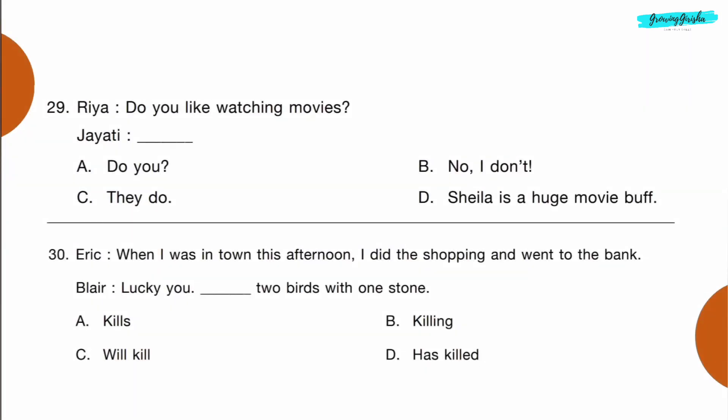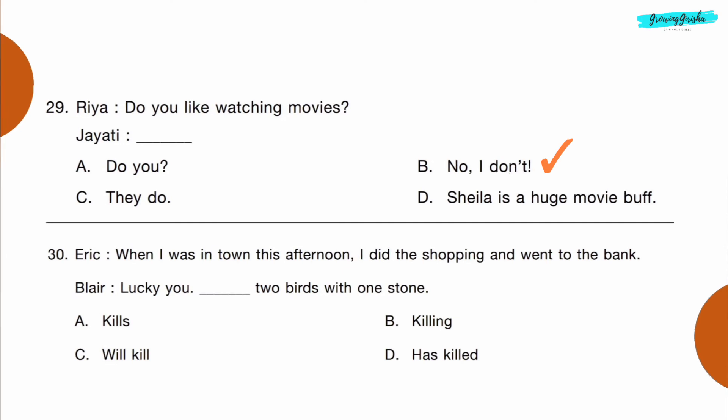Question 29 — Ria: Do you like watching movies? Jayati: dash. Option B: No, I don't.